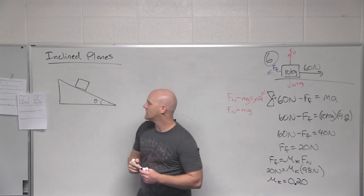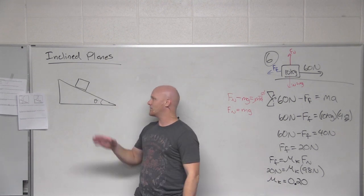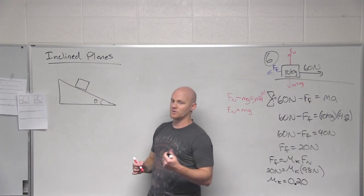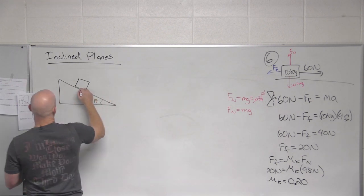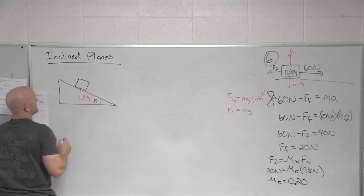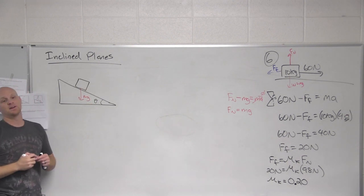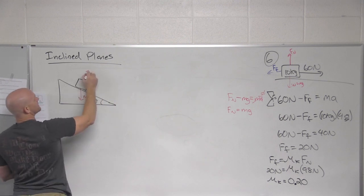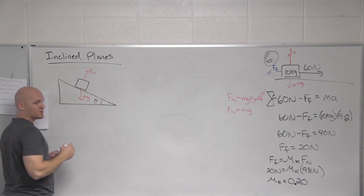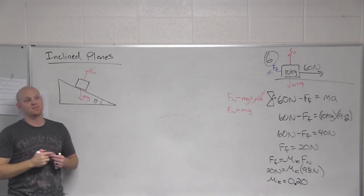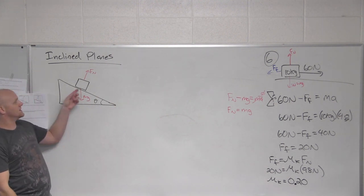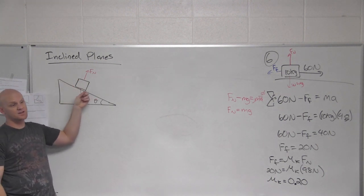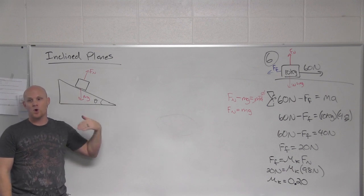Let's set up our free body diagram. What forces are acting on that box up on that plane? Gravity — which points down. And what else? We have a perpendicular contact force called the normal force. If this is a frictionless surface, that's all you have.